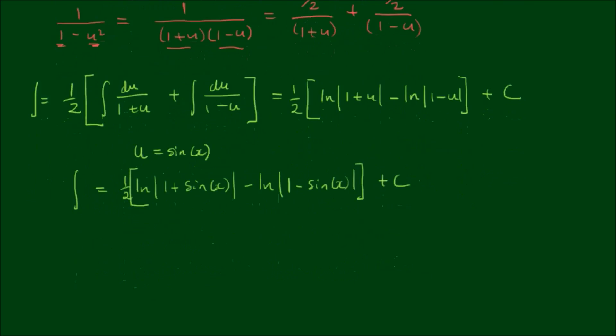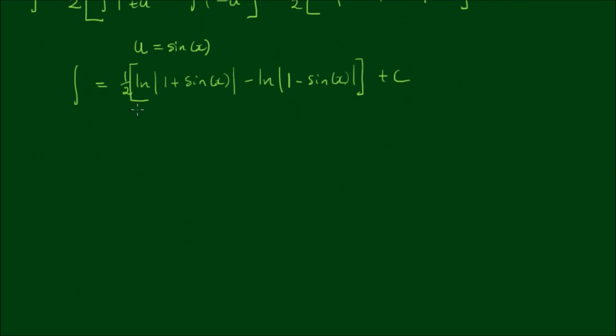So the integral is equal to this. Now we're not finished yet because now we need to simplify this part here. So we have the difference of two logs. And if we know our log laws, we can write this as log of 1 plus sin x over 1 minus sin x. Because log a minus log b is equal to log of a over b. So this is the rule that we are using.